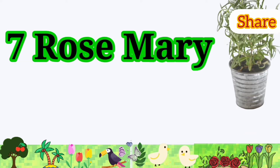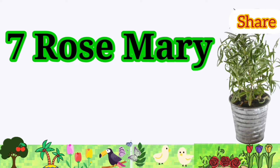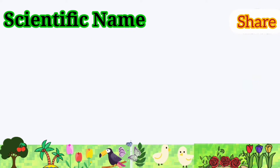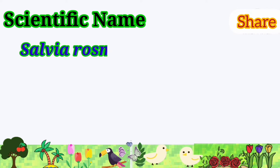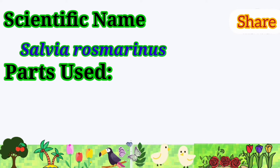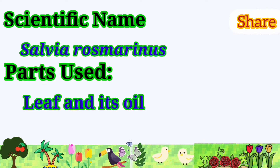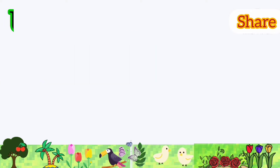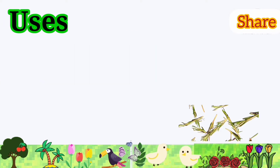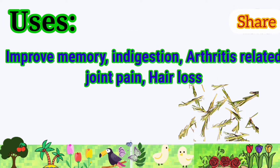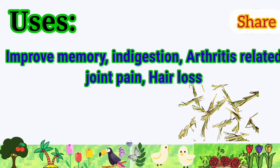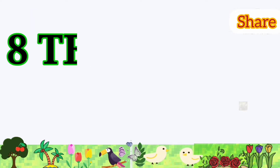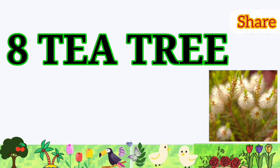Rosemary: its scientific name is Salvia rosmarinus. Parts used are the leaf and its oil. It is used to improve memory, indigestion, arthritis-related joint pain, and hair loss.